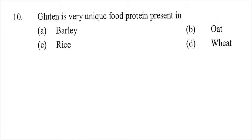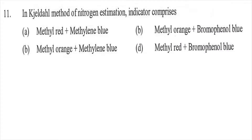Question ten: Gluten is a very unique food protein present in — option A barley, option B oats, option C rice, or option D wheat. The right answer is D, wheat.